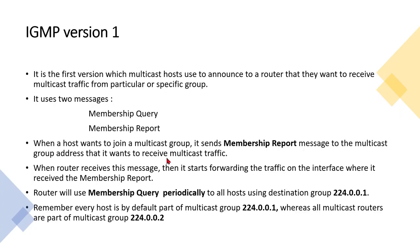The router uses membership queries periodically. When the router sends query messages they go to address 224.0.0.1, because every host by default is part of multicast group 224.0.0.1, known as the all-hosts group. Any message sent to this address will be received by every host. All multicast routers are by default part of 224.0.0.2, so any message sent to that address goes to routers.